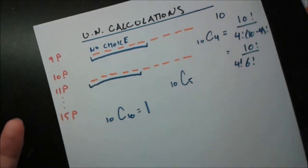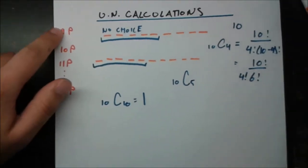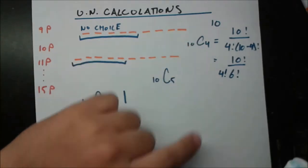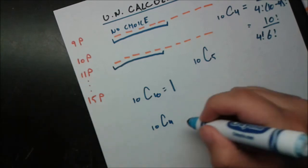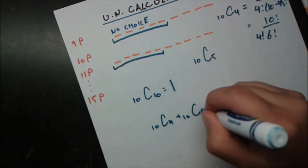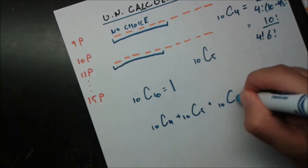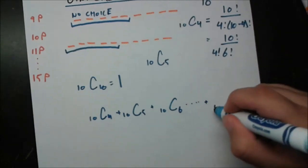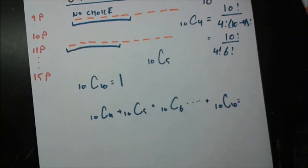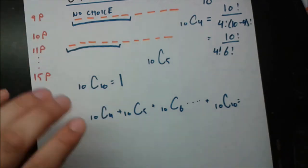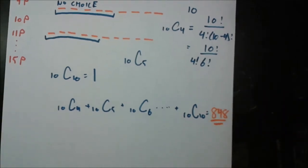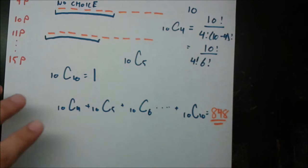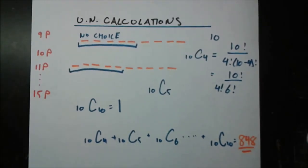So how many winning coalitions are there in total? The nine-player winning coalitions number 10 choose 4, the 10-player ones are 10 choose 5, then 10 choose 6, and so on all the way up to 10 choose 10. When you add all of those up — using a calculator or by hand — you get 848. That's how many total winning coalitions there are in the United Nations to get a motion to pass.